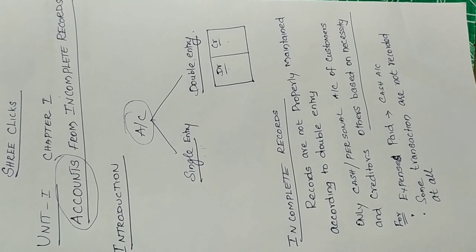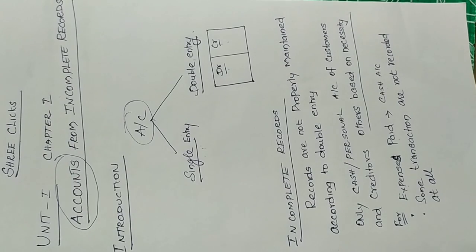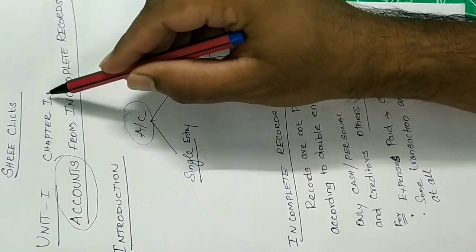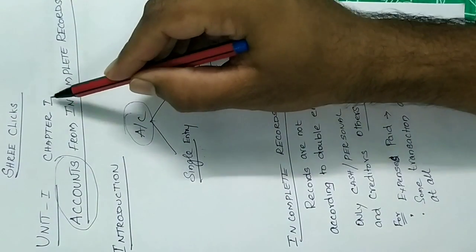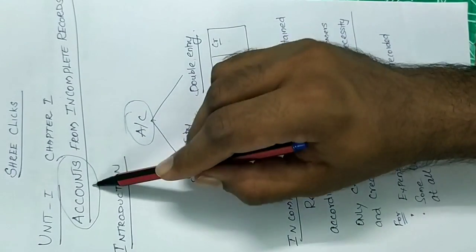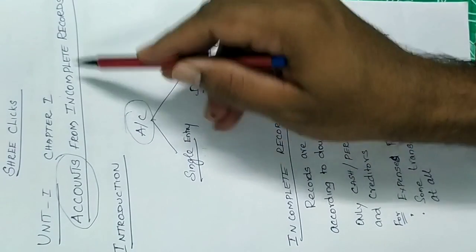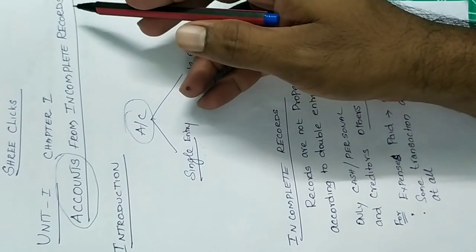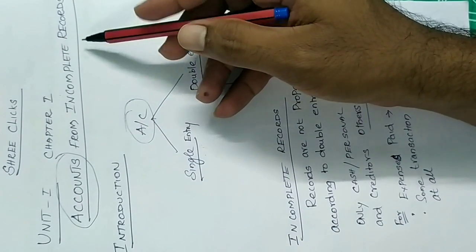Welcome to Strykliks. Now we will talk about 12 Standard Accounts, Unit 1, Chapter No. 1: Accounts from Incomplete Records.